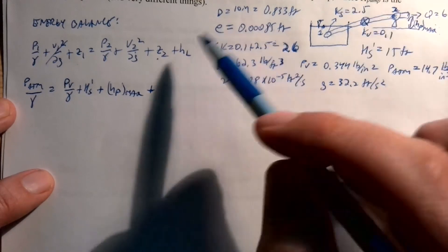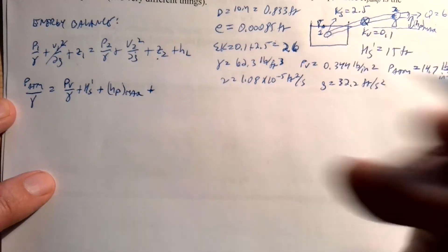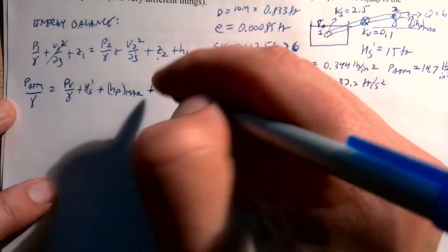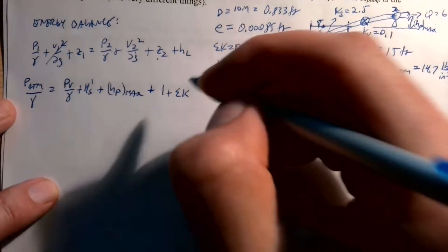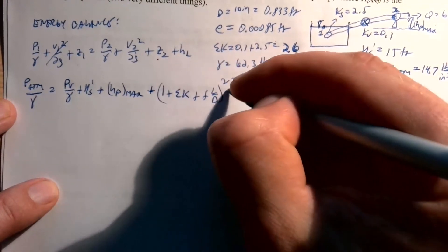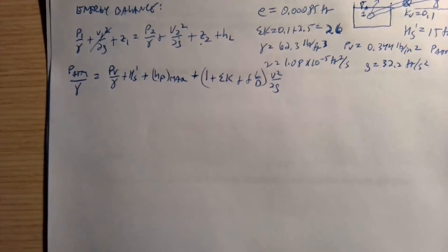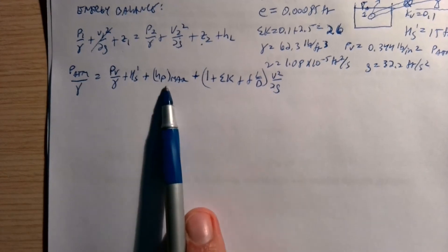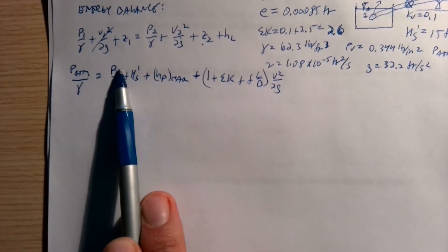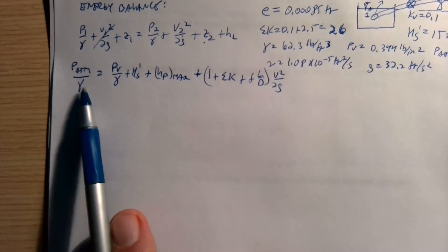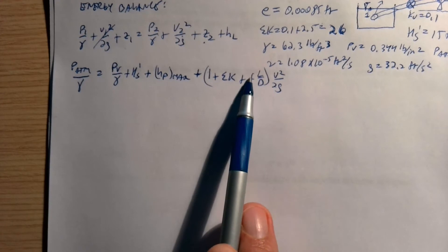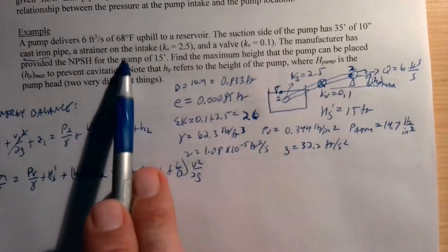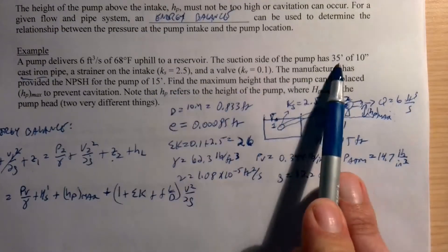There's still a velocity at point 2 entering the pump, and we have head losses including minor losses and Darcy-Weisbach friction: h_L = [ΣK + fL/D] × V²/2g. Solving for h_p max, we need: F (friction factor), V, g, L = 35 feet, D, and the given HS prime. We still need to find F, so we go get that.